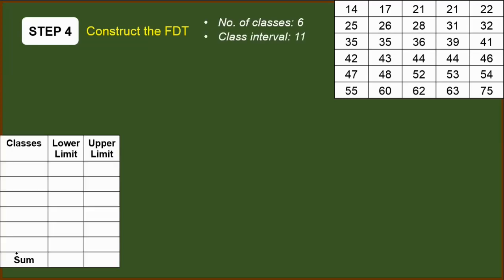So classes. Usually, the classes start with the smallest observation, which is 14. So we will start here with 14. In order to identify the next part or the next starting point for the next class, we will use the class interval, which is 11. We will add 11 to 14. 14 plus 11 is 25. So we will write 25. For the next class, we will add again 11 to the previous starting point. 25 plus 11, we have 36. Doing the same, we have 47. Add 11, we have 58. And for this class, we have 69.